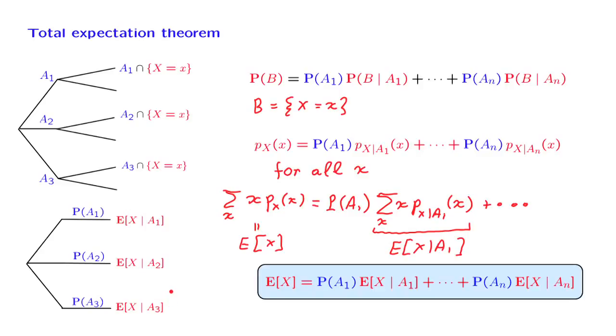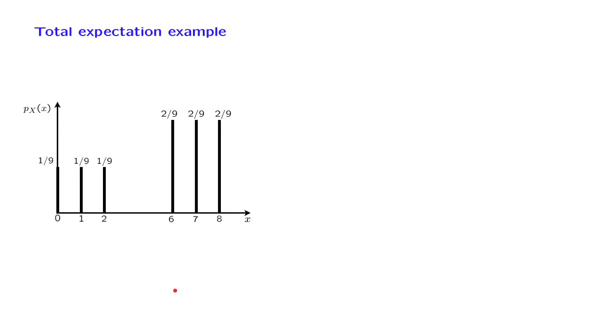Let me illustrate the idea by a simple example. Let us consider this PMF, and let us try to calculate the expected value of the associated random variable. One way to divide and conquer is to define an event A1, which is that our random variable takes values in this set, and another event A2, which is that our random variable takes values in that set.